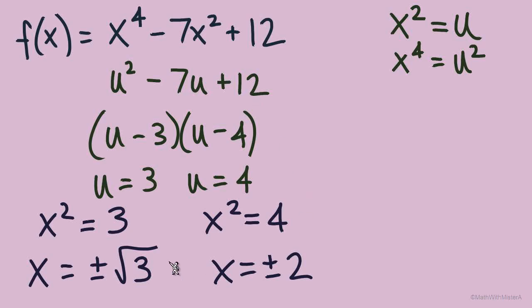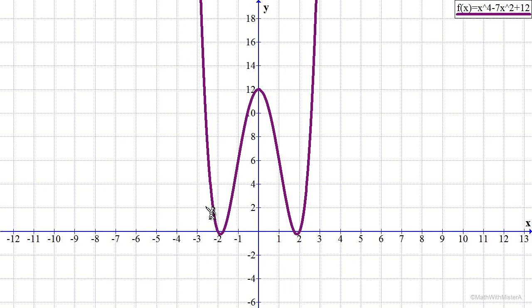Let's take a look at the graph and make sure we are seeing x-intercepts at these four locations. There's our graph x^4 - 7x^2 + 12, and we have those intercepts at positive and negative 2 and positive and negative √3.